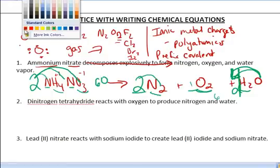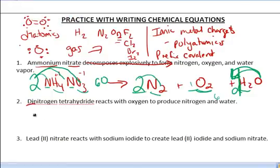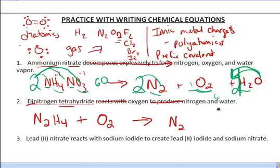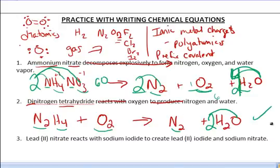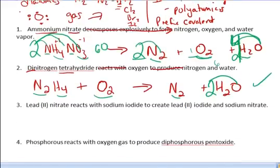Let's look at the next one. Dinitrogen, so right away I see prefixes. I love when I see prefixes because I don't have to think. I just write N2. Tetrahydride, that's hydrogen with a four. Reacts with oxygen, diatomic, to produce nitrogen, diatomic, and water, plus H2O. So there's my sentence turned into chemical equations. And now let's go ahead and try to balance this. Two nitrogens, two nitrogens, four hydrogens. Let's put a two in front. Two oxygens. Two gets distributed. Two oxygen. So we're all set. It's all balanced.